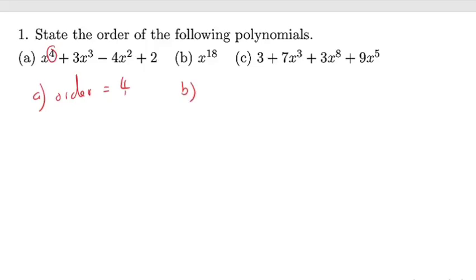For part b, we can see that the highest power — we just have x to the power 18. So, our order in this case for part b is simply 18. Same thing for part c. We have power 3, we have power x, we have power 5. The highest power of x out of these is 8, so the order is 8.